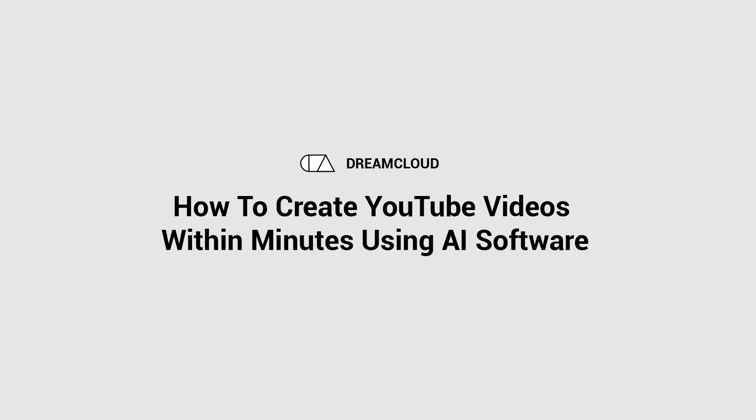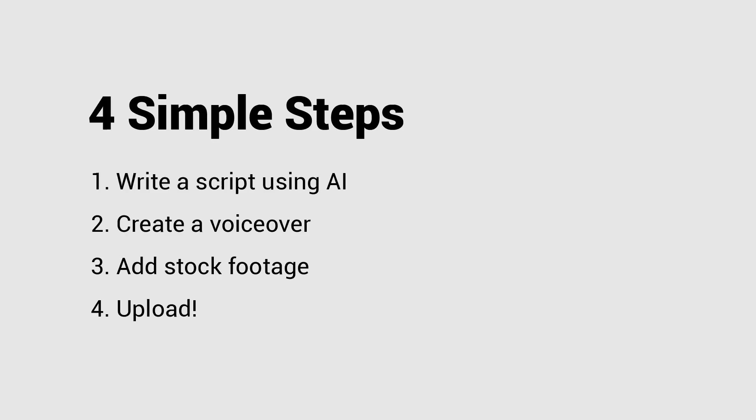There are just four simple steps. Step one: we're going to write a video script using AI. This AI is going to write a script for you and you simply just need to make a few tweaks. Then we're going to create a voiceover — not a voiceover artist, not your own voice — we're going to use another AI software that sounds very human. Then step three and step four, we're just going to add some stock footage, add some background music, make the video look legit, and then it's ready to upload. We're going to do all of this in less than half an hour.